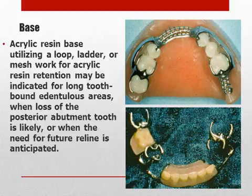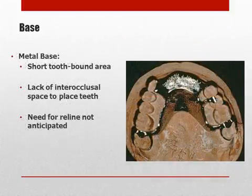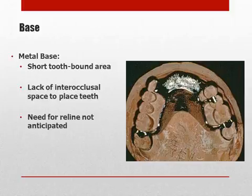The denture base may consist of a ladder or mesh; the selection is based on the length of span, anticipation of reline, extensive soft tissue defects, and arch contour. A metal base is normally used with firm, healthy edentulous tissue, in areas of inadequate space to insert replacement teeth, or areas where relining is not anticipated.